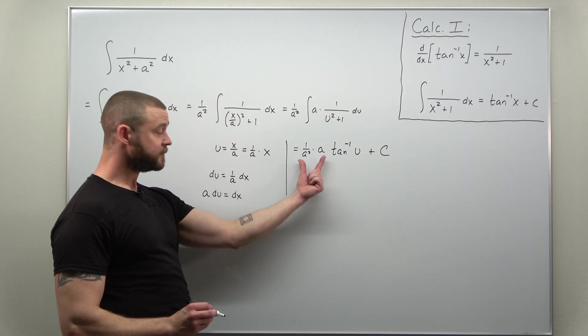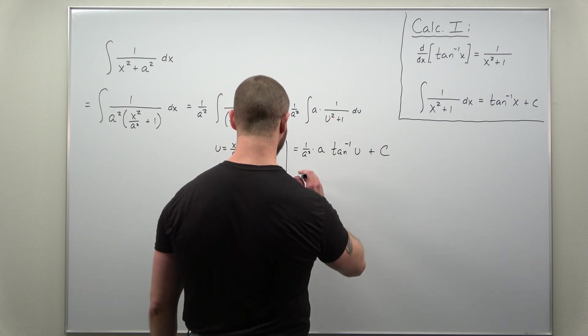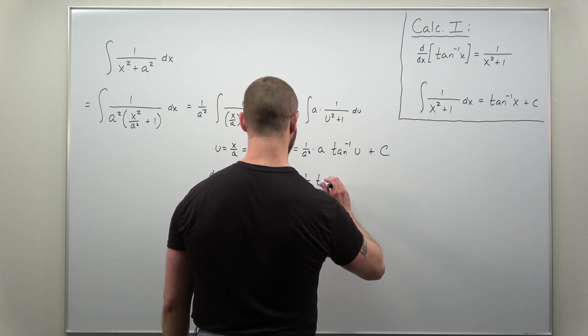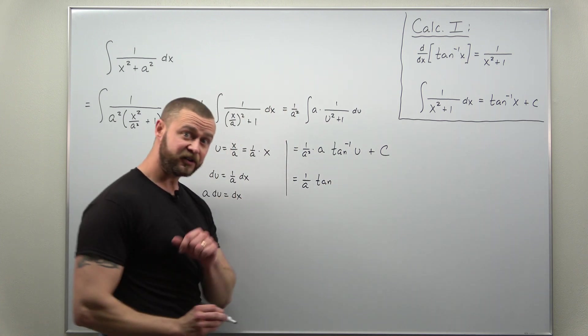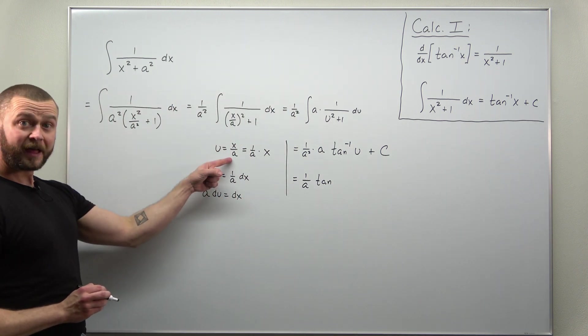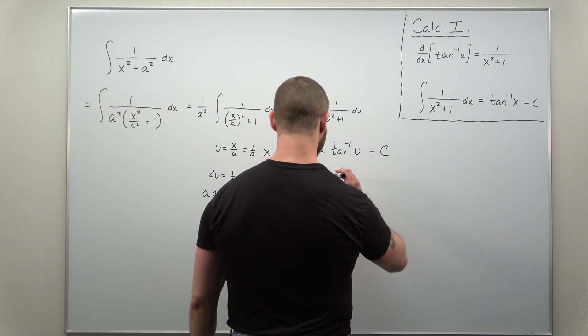If you just cancel out your factors of a there, you're left with 1 over a times inverse tangent of u. And we're going to back substitute u as x over a.